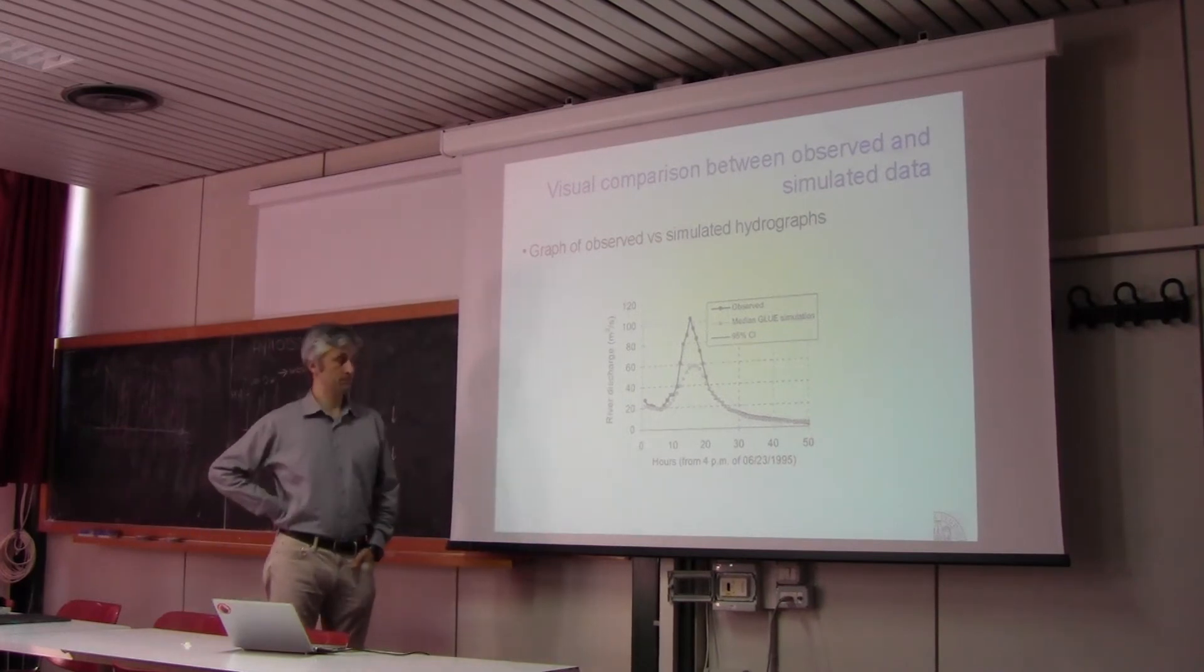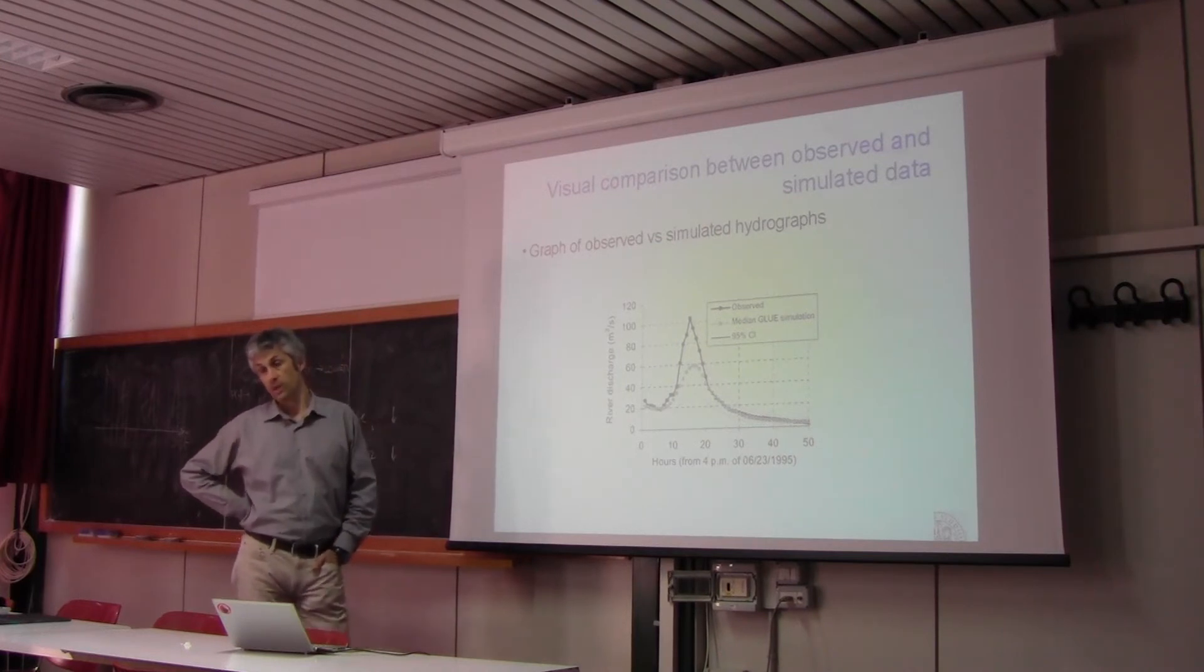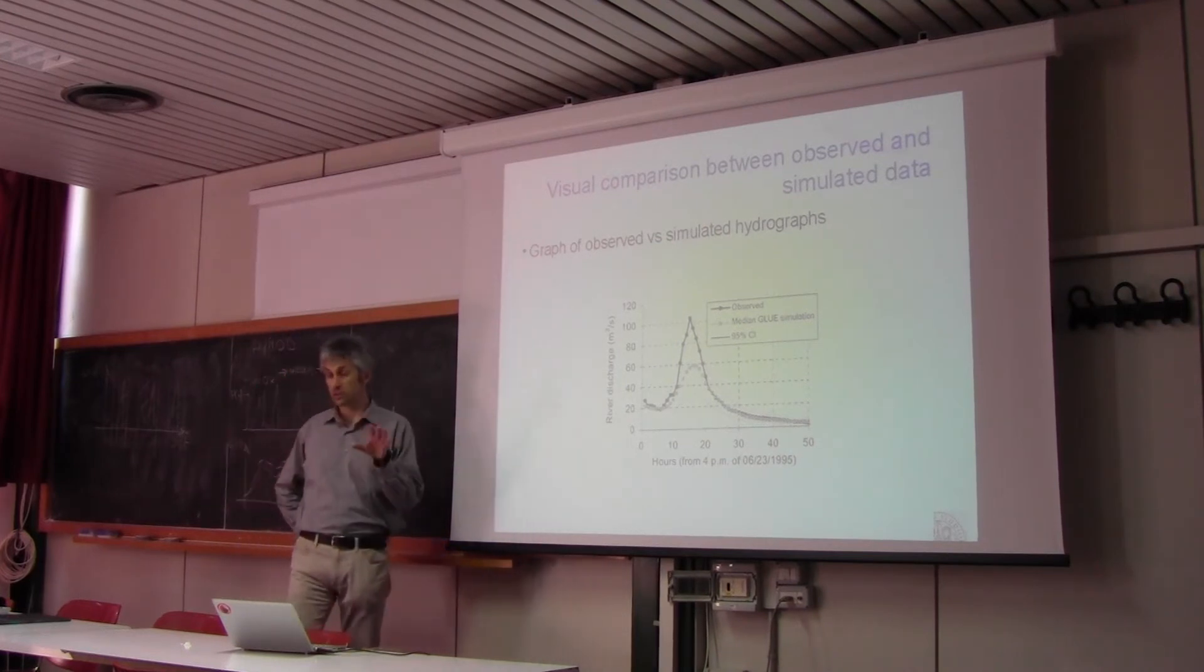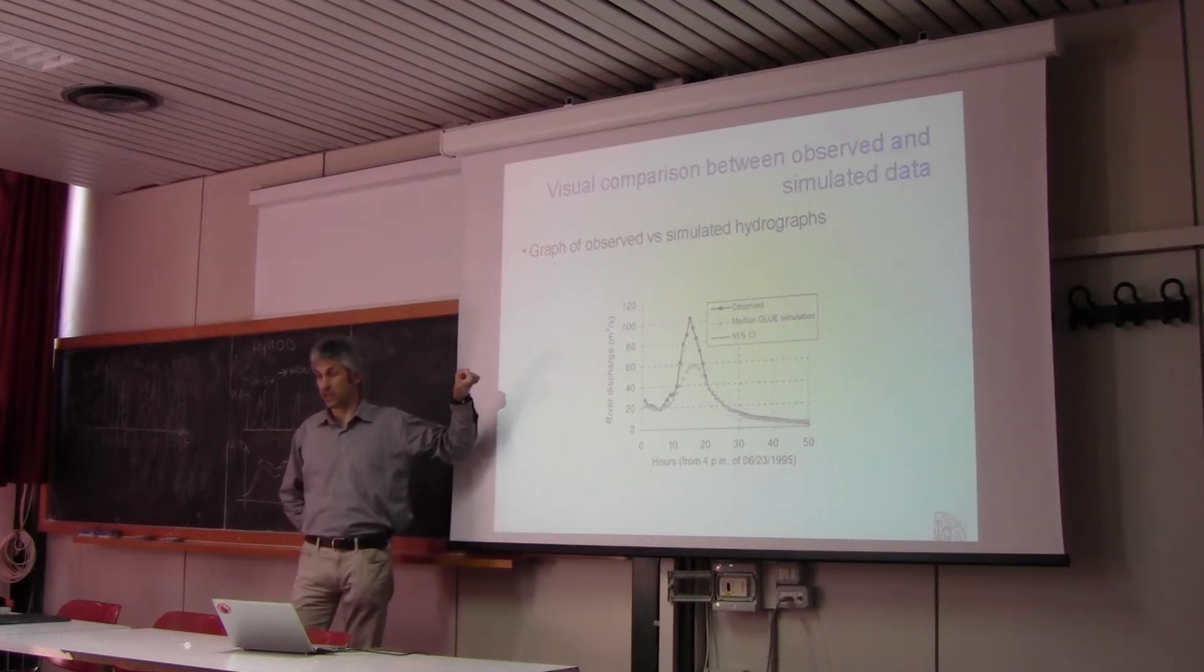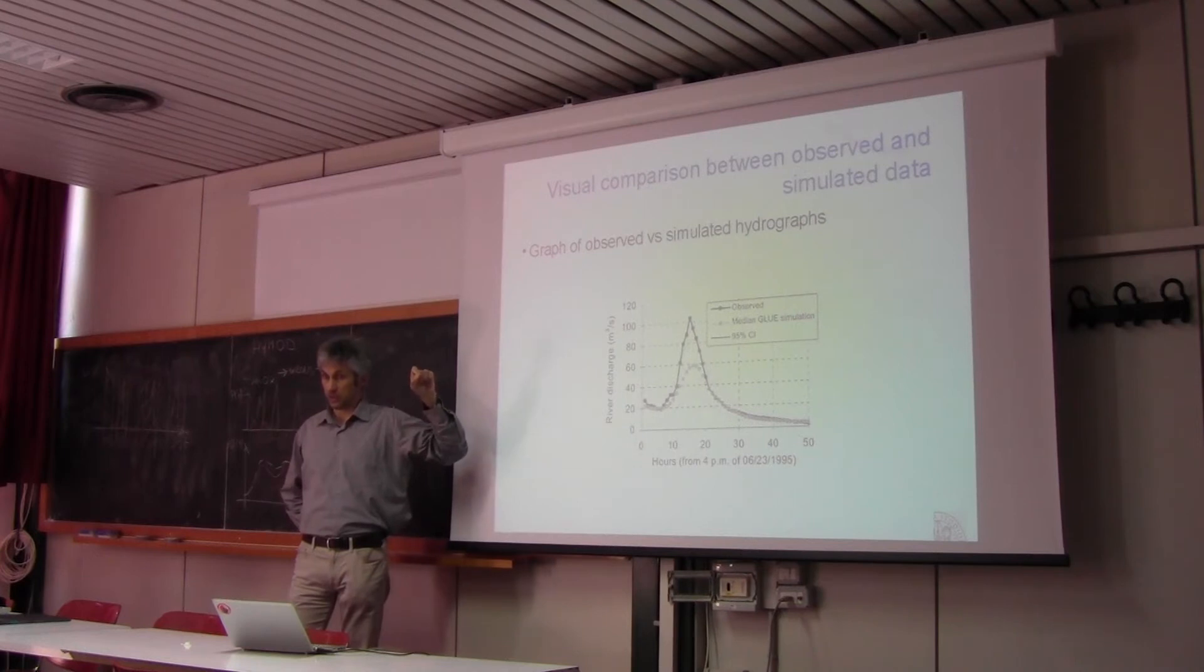How can we show the results of validation? Of course they can be shown by computing the same statistics that I previously used as objective functions. So the Nash efficiency in validation, the mean relative error in validation, the correlation coefficient in validation.